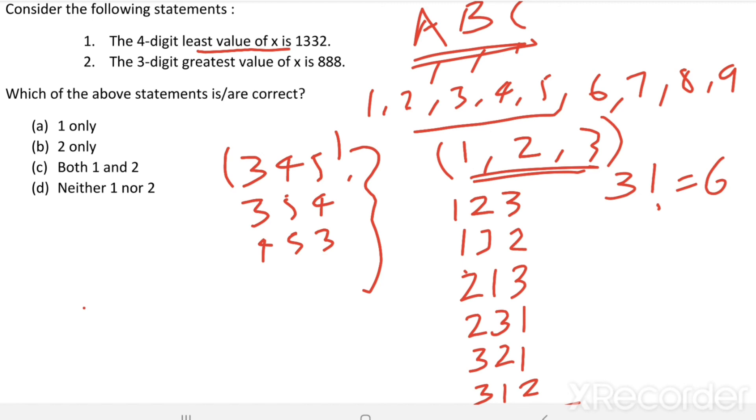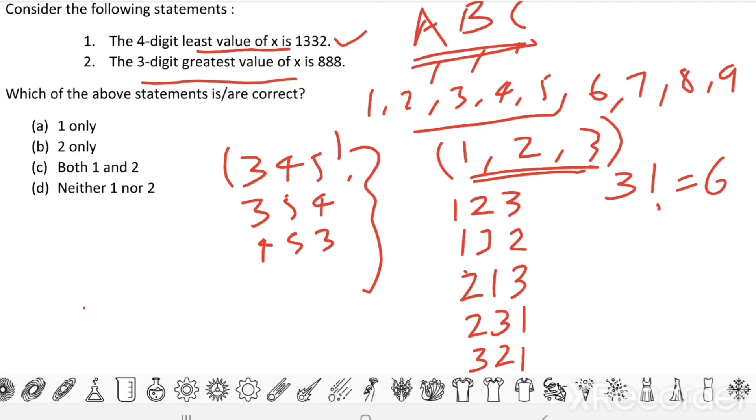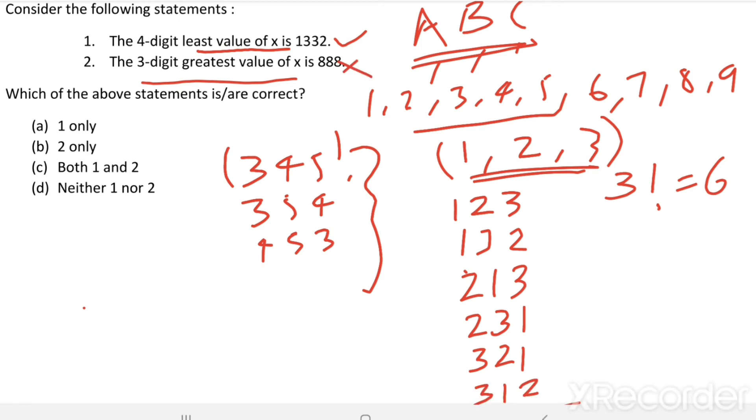And, that is also the 4-digit least value of X. So, statement 1 is true. Now, the 3-digit greatest value of X... the least value itself is a 4-digit number. So, the 3-digit greatest value of X is 888 is wrong. Only statement 1 is true.